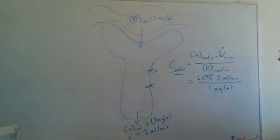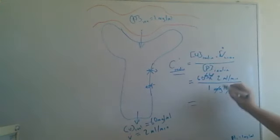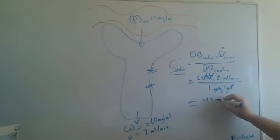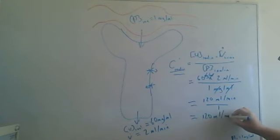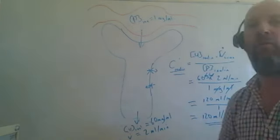So what we need to do now is to get rid of all the units. We get mg here, mg here, per ml here, per ml here. So we have a value of 60 times 2, 120 ml per minute over 1, which therefore gives us a value of 120 ml per minute as being the clearance of inulin.